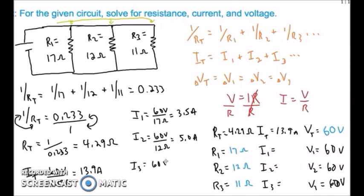I3 will be 60 divided by 11 ohms, and it is 5.4 amperes. If you add them up, you are going to get 13.9, so this is the verification step and we have completed the analysis. Thank you.